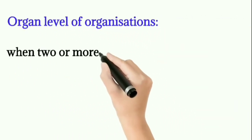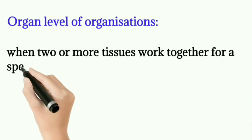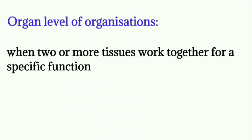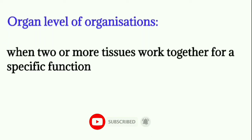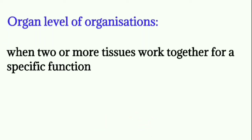Organ level of organization. When two or more tissues work together for specific functions, it forms an organ. A group of tissues constitutes an organ which performs particular functions. The example is platyhelminthes — members exhibit organ level of organization.